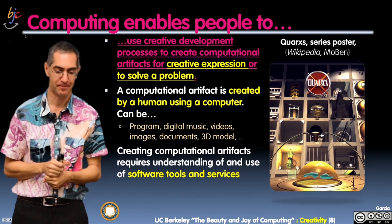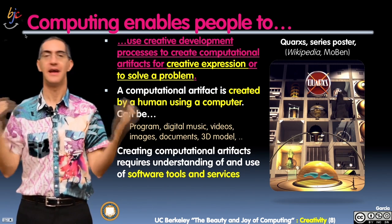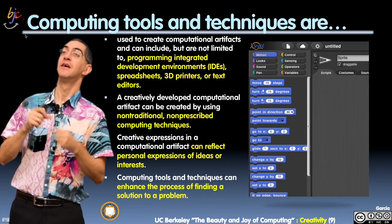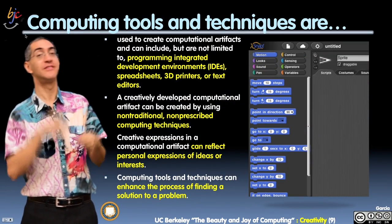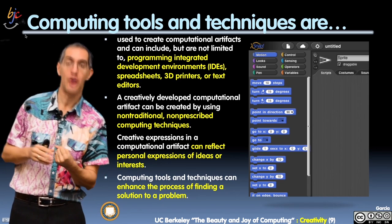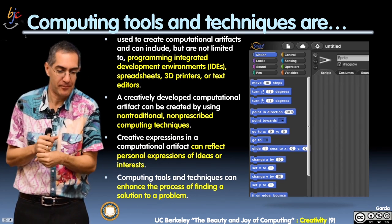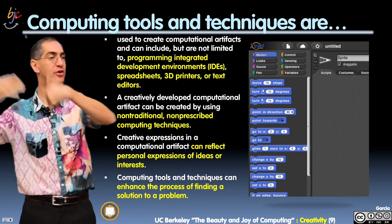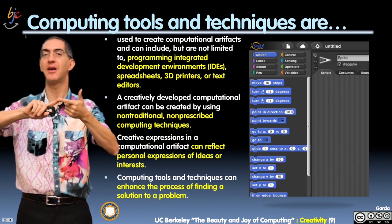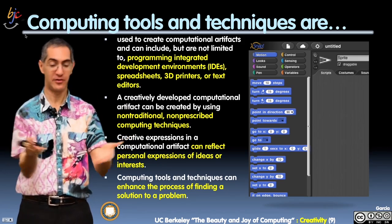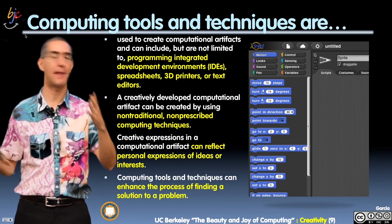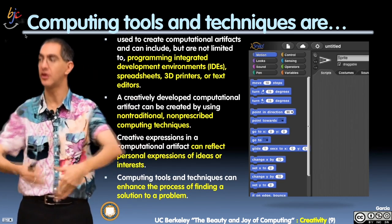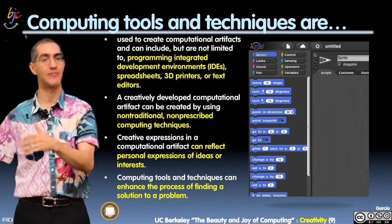Both the program and its output are CAs — both are computational artifacts. And obviously, if something is made using a computer, you have to use software tools and services to do that. These computational tools and techniques are used to make the artifacts. They include, but are not limited to, a programming interface. Here's a picture of Snap — a graphical, fun, and friendly interface for using a computer to make a CA, in this case making programs.